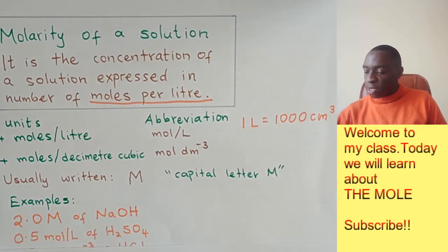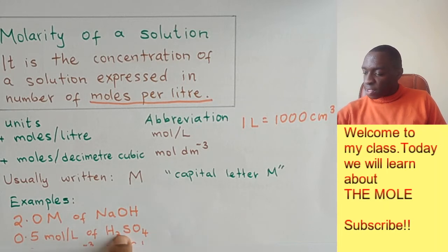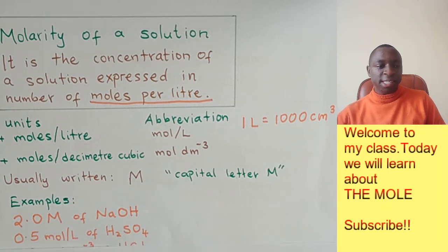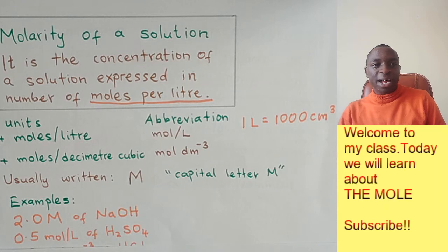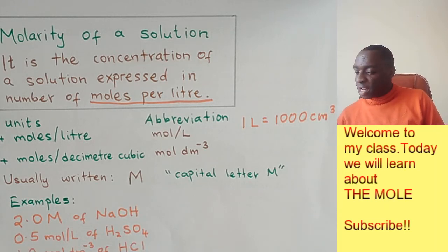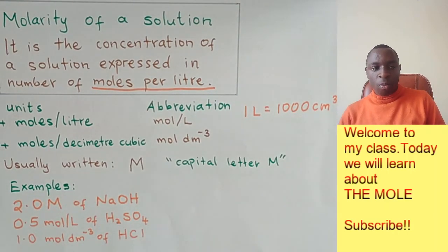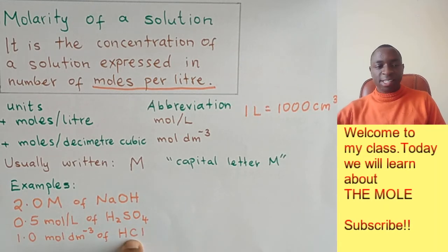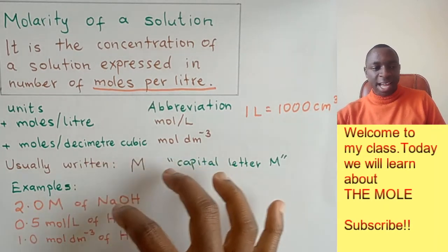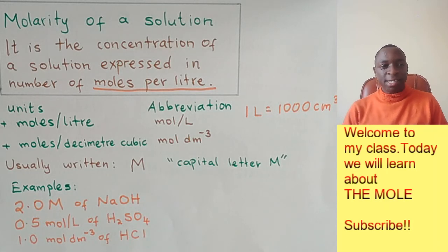What if you have 0.5 mol/L of sulfuric acid? That means 0.5 moles per liter of sulfuric acid. Then finally, we can also have like one molar. So that is 1.0 mol dm^-3 of hydrochloric acid. So all these three ways are different ways of expressing your molarity.